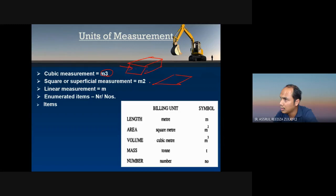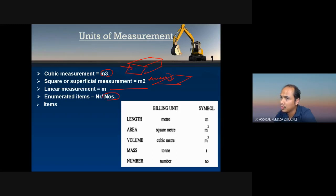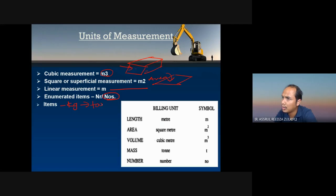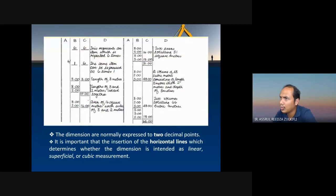You need to calculate in cubic meters, meter square — that's the area form — and then linear meter, which is length. And then enumerated items are in unit numbers. These are the typical units of measurement we use. Another unit is the tonne — we convert from kg to tonnes: 1000 kg equals 1 tonne.